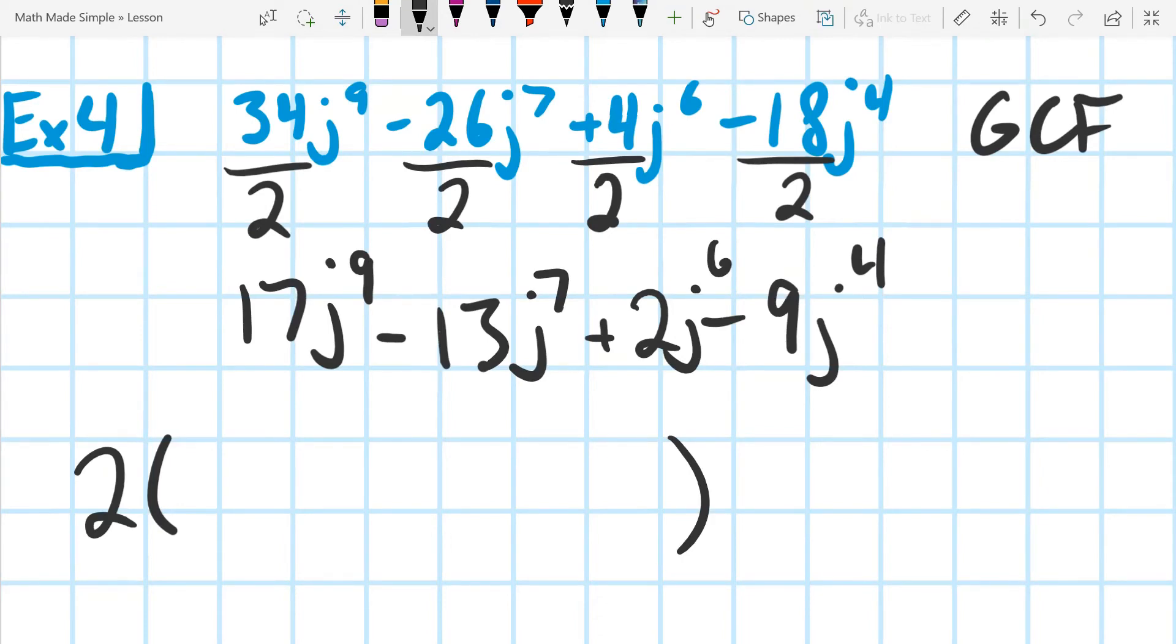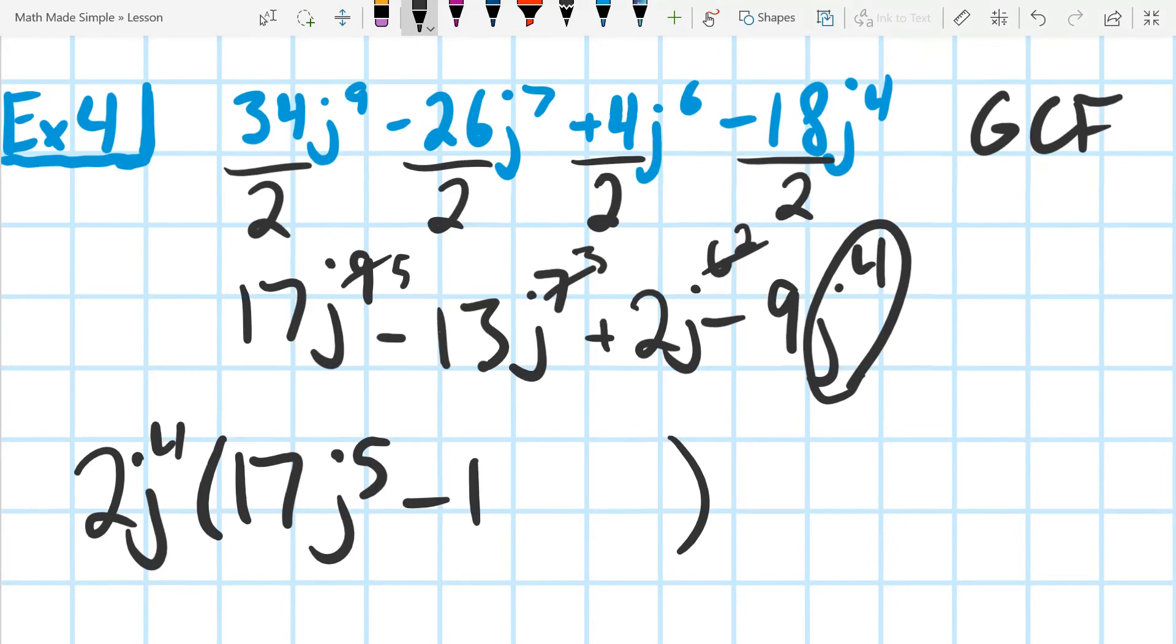All right, so they do all have j's in them, so I can definitely take out a j. What's the smallest exponent on the j? It's going to be that j to the 4th. So I can take at least that much out. If I take out j to the 4th, that means all of these are going to go down by 4. So that becomes a 5, and that becomes a 3, and that becomes a 2. So our final answer comes out to be 17j to the 5th, minus 13j to the 3rd, plus 2j to the 2nd, minus 9.